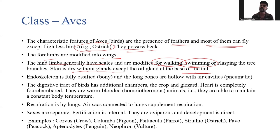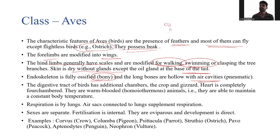In humans, oil glands are present all over the skin, but in birds the oil gland is only at the base of the tail. The endoskeleton is fully ossified — fully bony — and long bones are hollow with air cavities to become lightweight and help in flying. The digestive tract has additional chambers — the crop and gizzard.